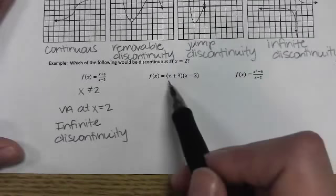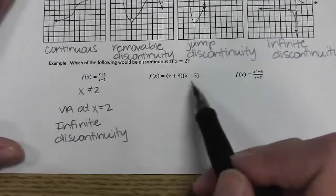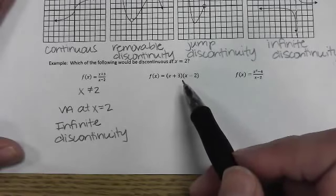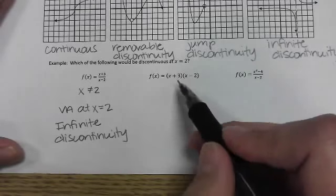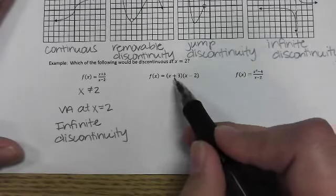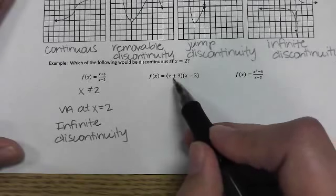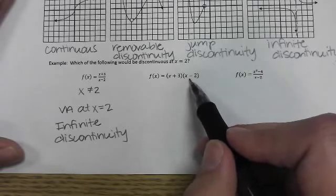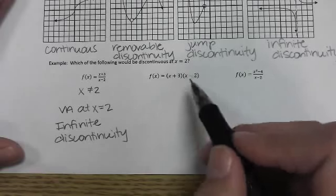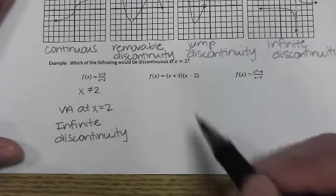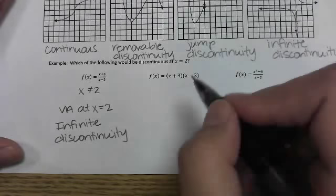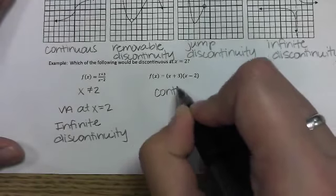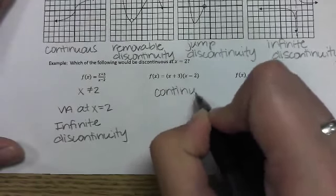For the next graph, this is just a parabola in intercept form, giving us the two x-intercepts: an x-intercept at negative three and an x-intercept at positive two. There's no reason for this to be discontinuous, so this is a continuous graph — nothing limiting us here.